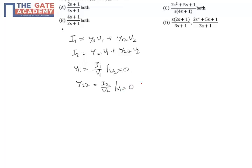First, we will consider the case when v2 equals 0 in order to determine y11. So now v2 equals 0. Let us draw the circuit when there is a short-circuit applied across v2.